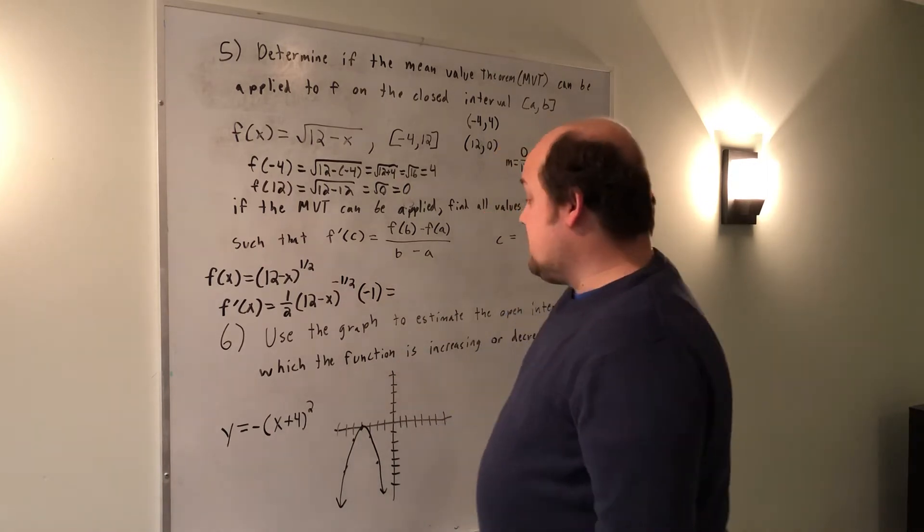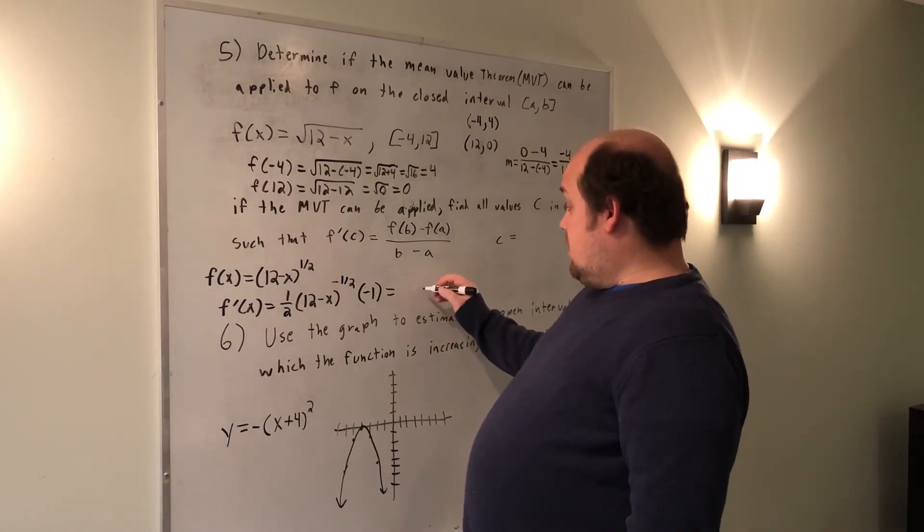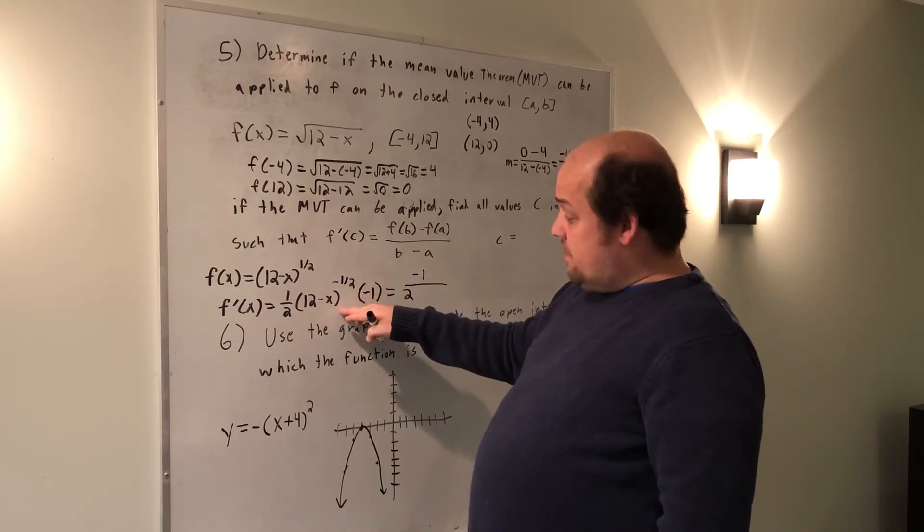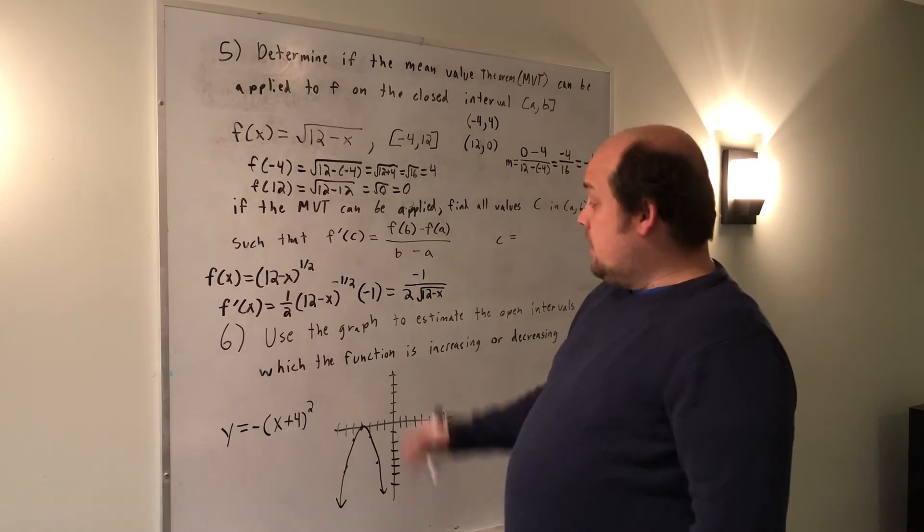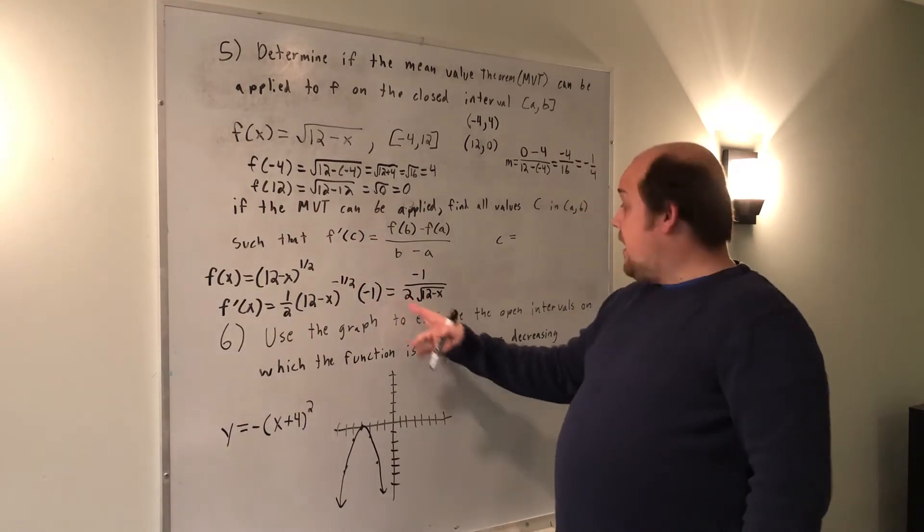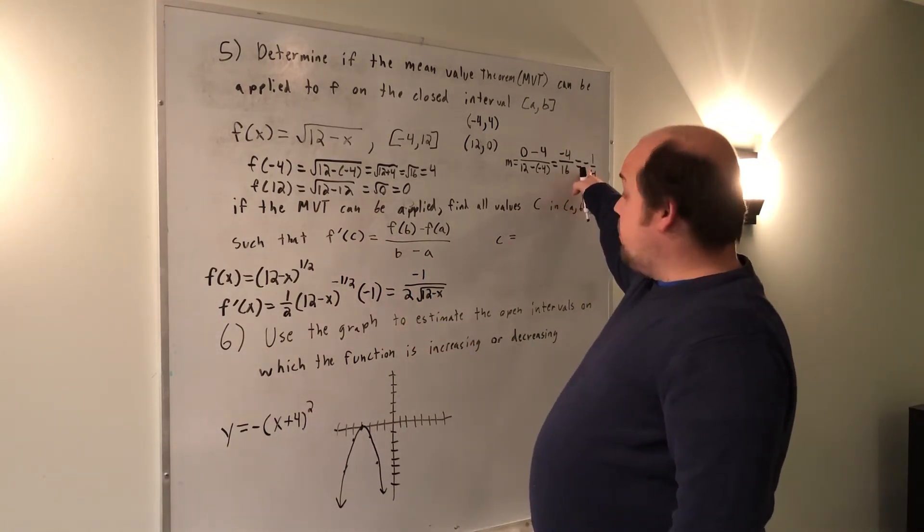If I simplify this slightly, the 2 stays on bottom, negative 1 stays on top, and this 12 minus x goes to the bottom as the positive 1 half power, so it becomes the root of 12 minus x. This is the correct derivative.